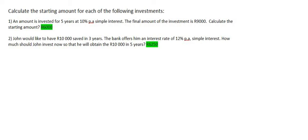In these questions, we're going to learn how to calculate the starting amount. For number one, it tells us that an amount is invested for five years at 10% simple interest. The final amount of the investment is 9,000 Rand. Calculate the starting amount.